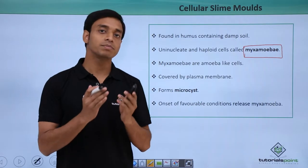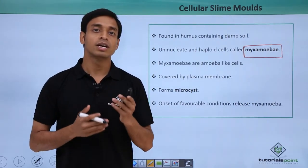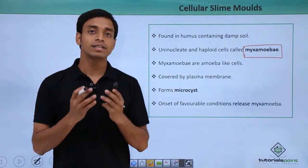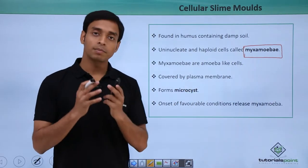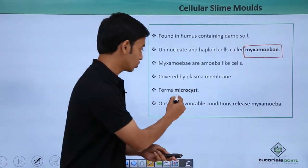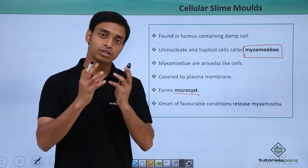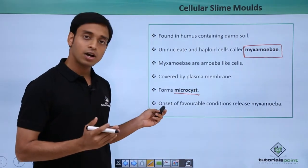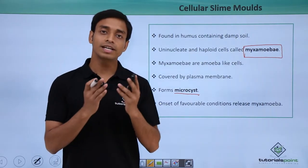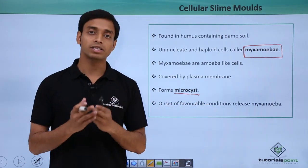Under unfavorable conditions — such as lack of nutrients, temperature variations, food availability, or pH variations — these conditions result in the secretion of a cellulosic wall around the plasma membrane. These structures are termed micro cysts, which are protective coverings formed under unfavorable conditions. On the onset of favorable conditions, the micro cysts germinate and release new myexamoeba cells.